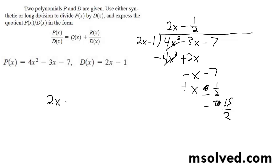So our final solution is 2x minus 1 half minus 15 over 2 quantity 2x minus 1. There you have it.